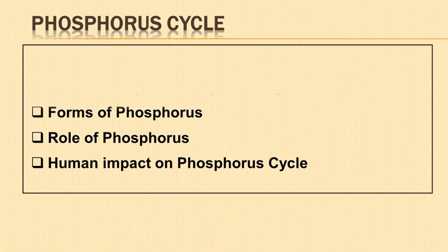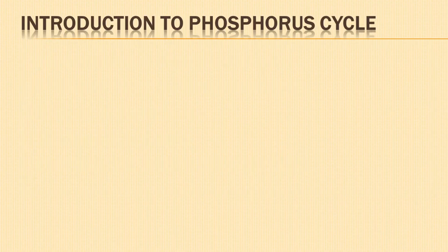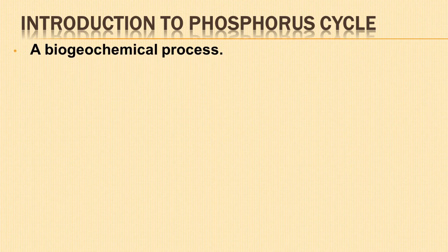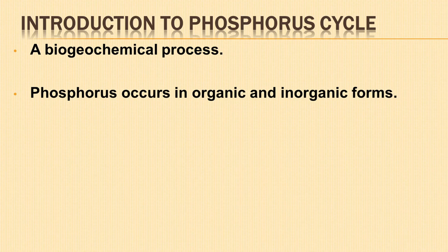Hello. In today's video we shall learn in detail about the phosphorus cycle. By the end of this video you will have a clear understanding about the different steps in the phosphorus cycle, different forms of phosphorus, and its role in the ecosystem. Phosphorus cycle is a biogeochemical process in which the movement of phosphorus takes place through the lithosphere, hydrosphere, and biosphere — through both the abiotic and biotic parts of the earth. In living organisms, phosphorus occurs in both organic and inorganic form.